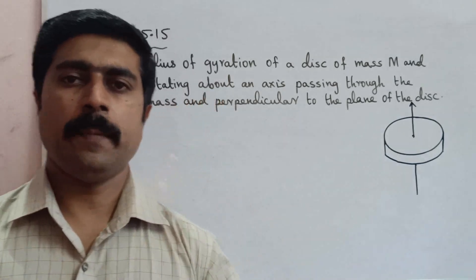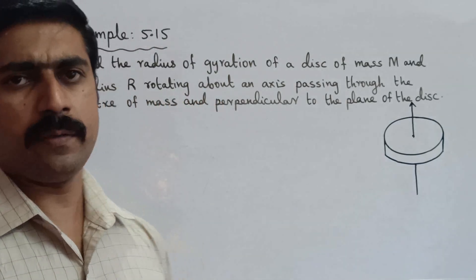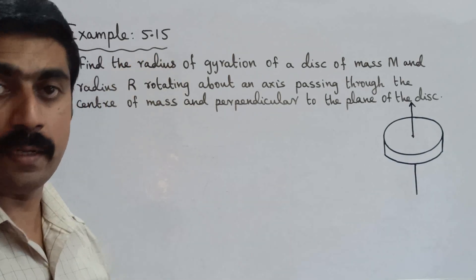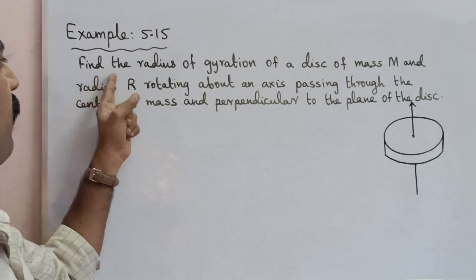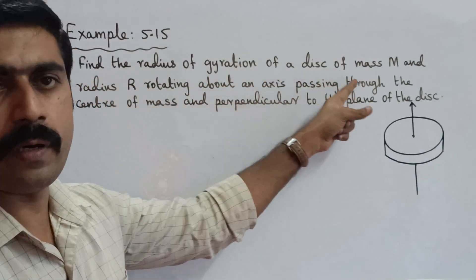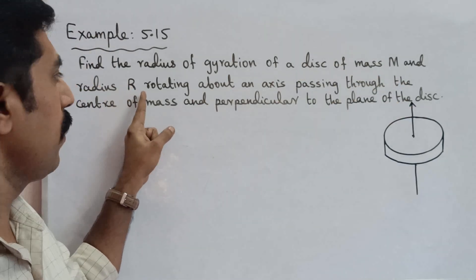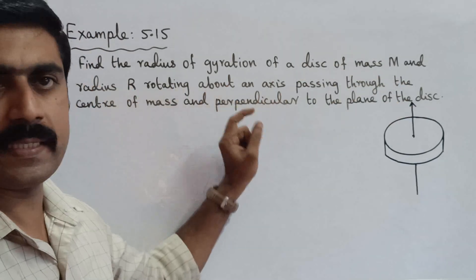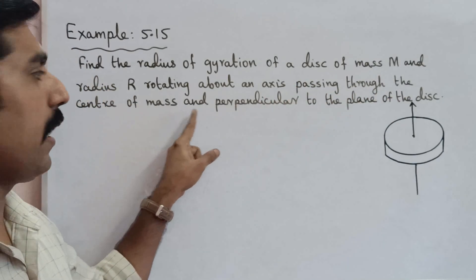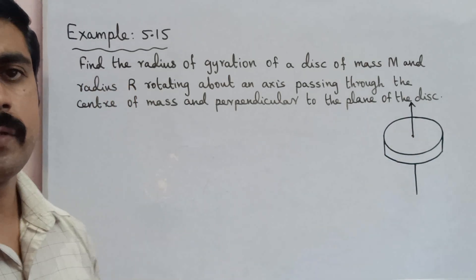Hi students, now we have a simple problem but it is important. This is Example 5.15. Find the radius of gyration of a disk of mass M and radius R rotating about an axis passing through the center of mass and perpendicular to the plane of the disk.